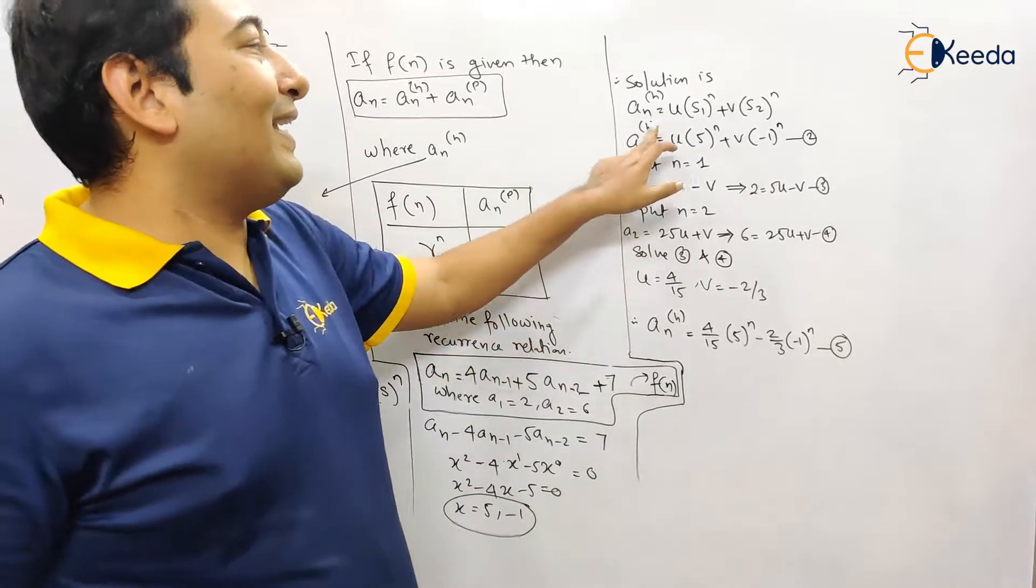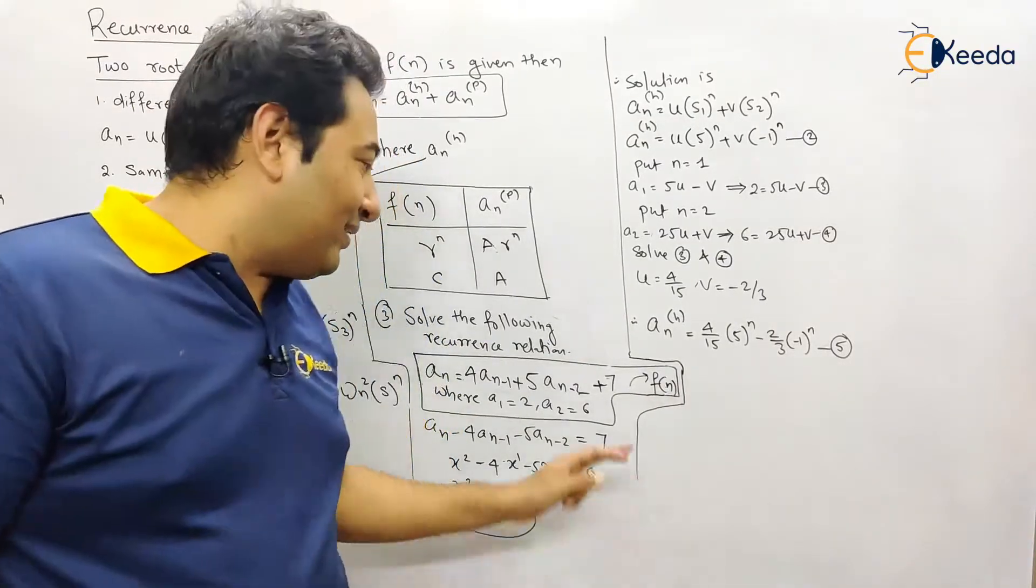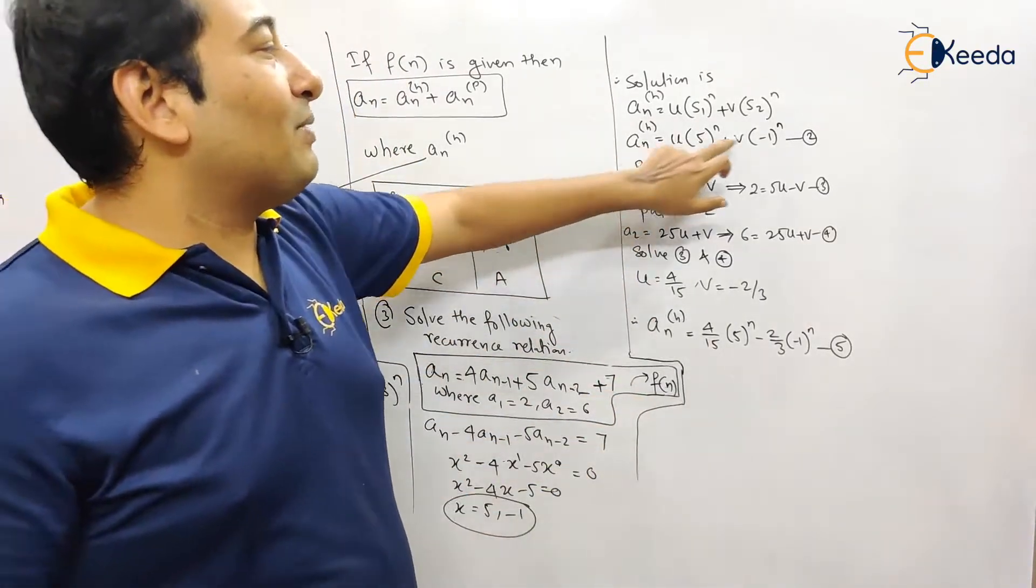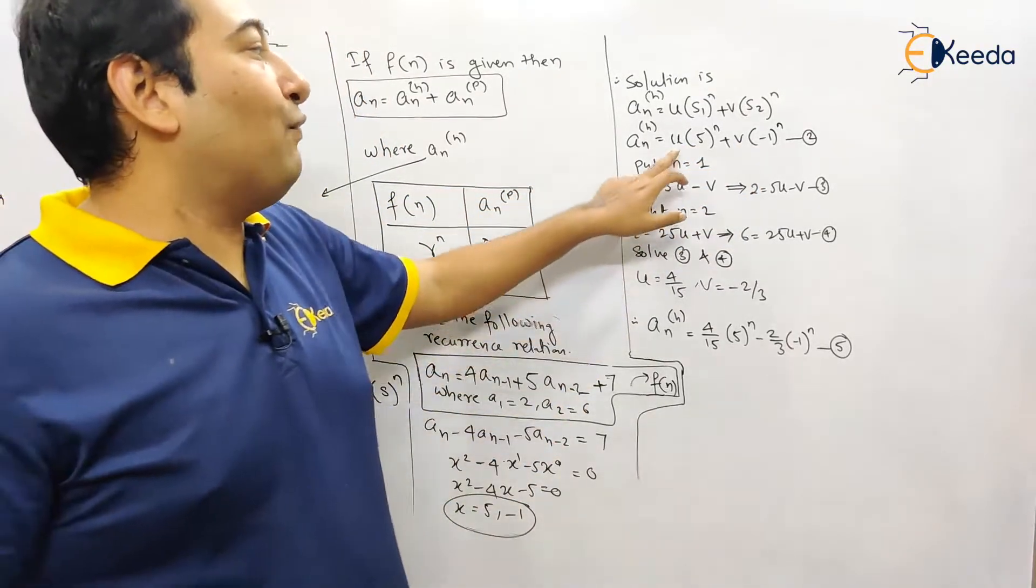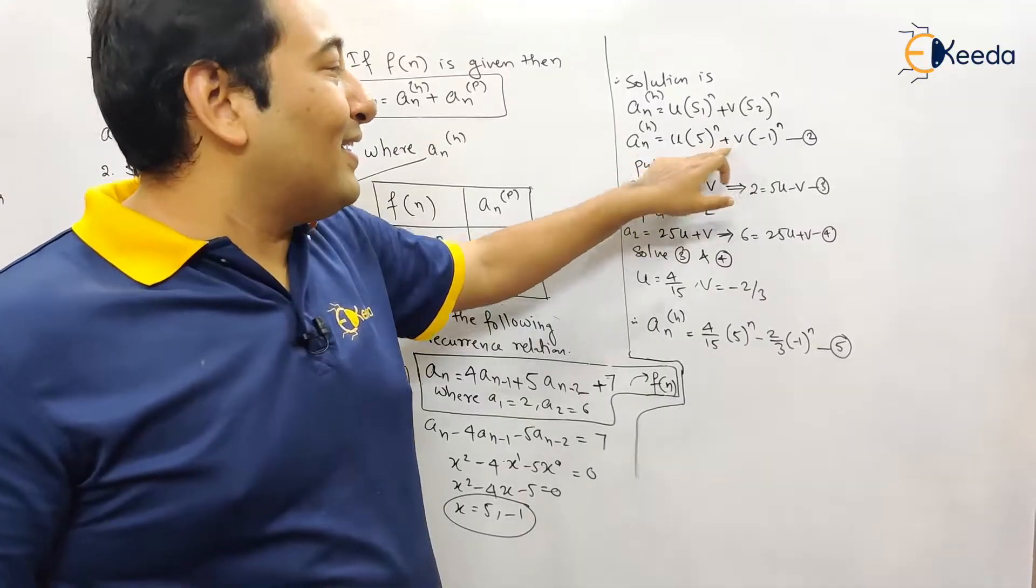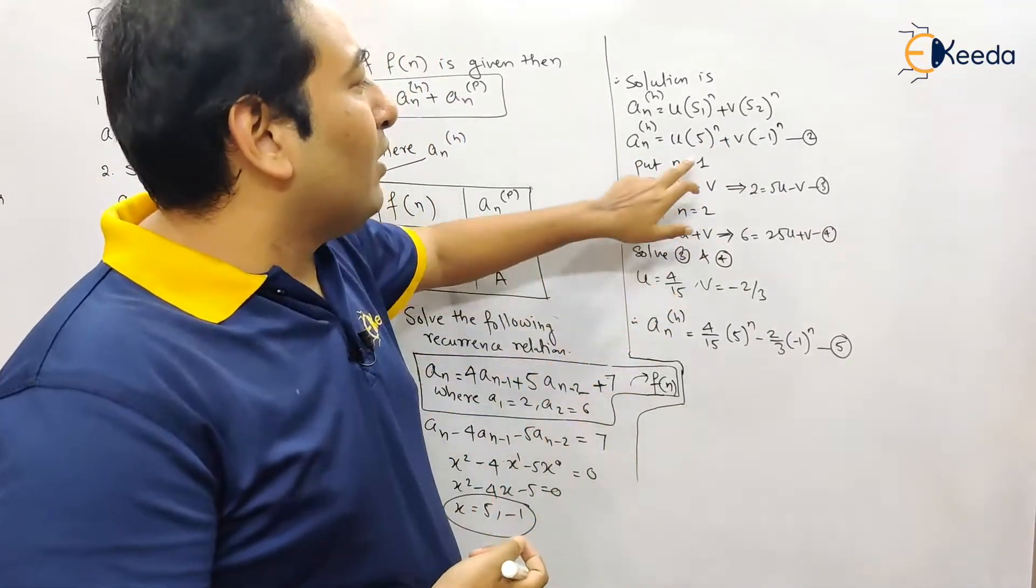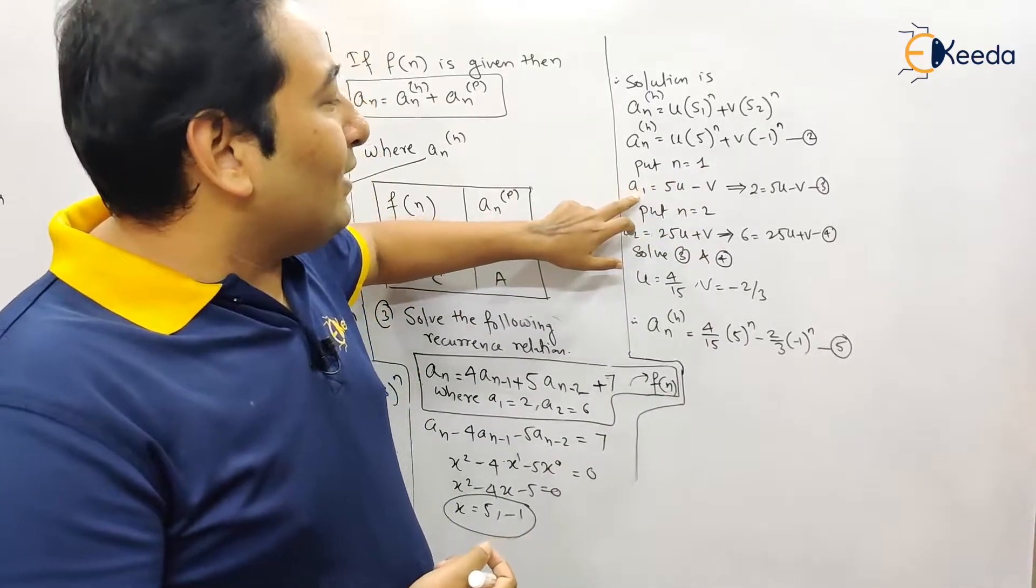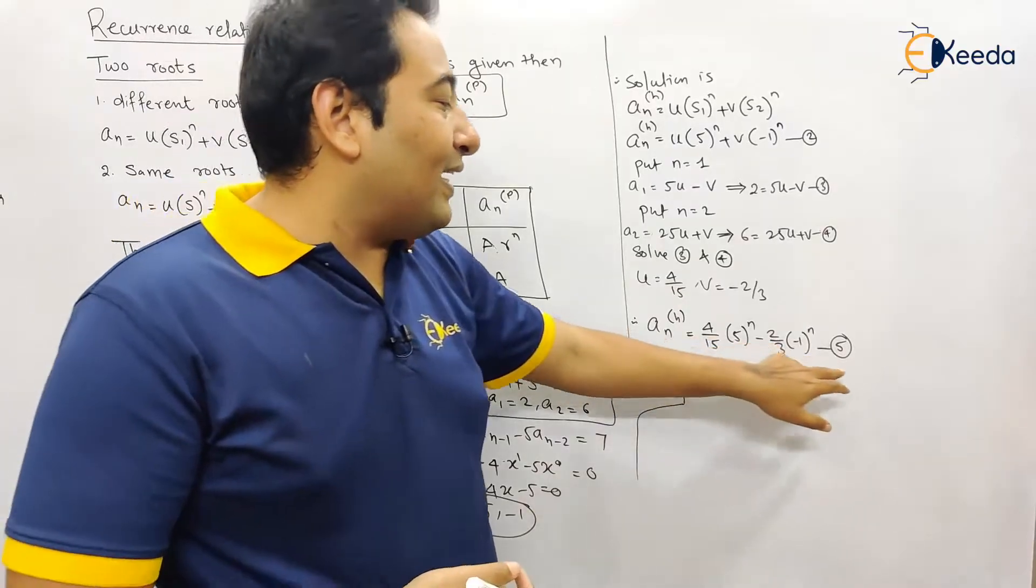So there are two roots. Now the solution is A_nh plus A_np because there is a function. Since initial conditions are given, we need to find u and v. Same procedure we have already done in problem number one: we're going to put n equals 1 and n equals 2, we're going to get u and v, and this is my A_nh.